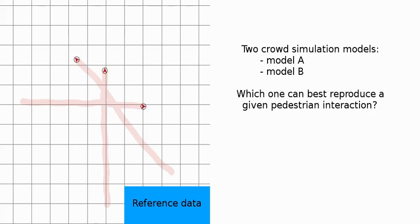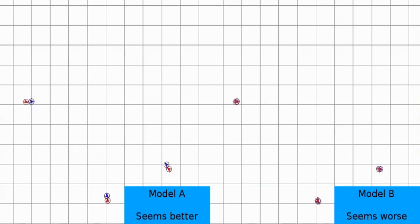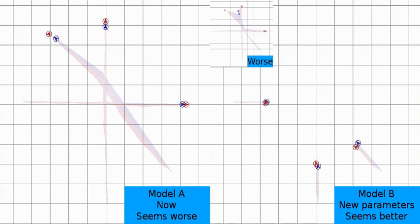You can then choose some reference data and simulate it with both models. In this case model B seems worse, as its trajectories aren't very accurate at the end. However, you could change model B's parameters and thus much improve its trajectories. At this point it would now seem that model B is the better model.